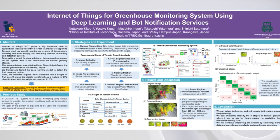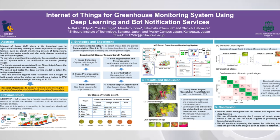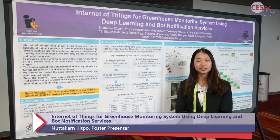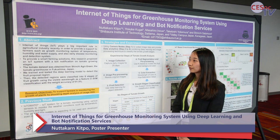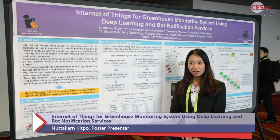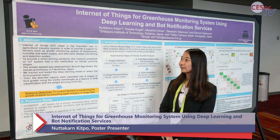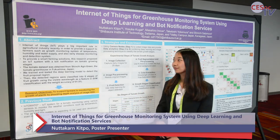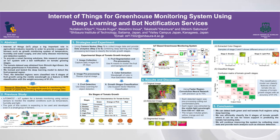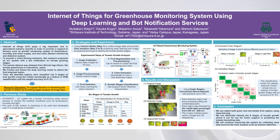As we know, the Internet of Things has become very important in the agriculture field. We are looking at the tomato greenhouse problems that farmers face — harvesting problems and also disease and pests. We would like to provide a smart system using an IoT system with a bot notification service and deep analysis of the tomato growth stage.